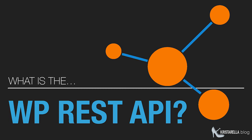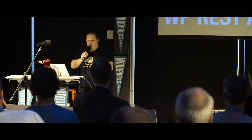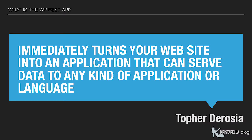So what is the WordPress REST API? WordPress has multiple APIs — the theme API and the plugin API — but none of those are RESTful; they're all dependent on you interacting with them via PHP. As Topher DeRossier put it, the WordPress REST API immediately turns your website into an application that can serve data to any kind of application or language. It breaks down barriers between languages and servers to provide information from one WordPress installation to another, or to change the information stored in your WordPress install from another location.